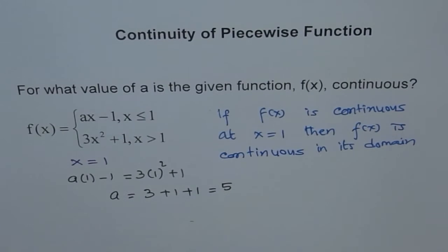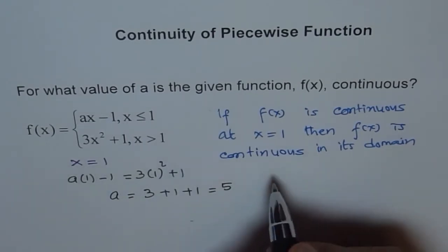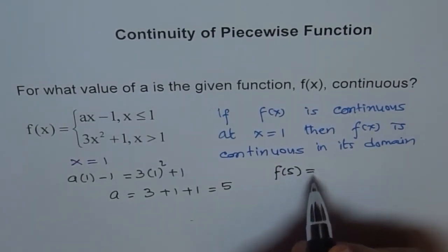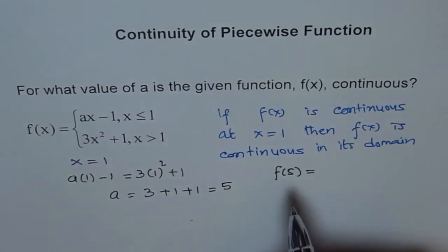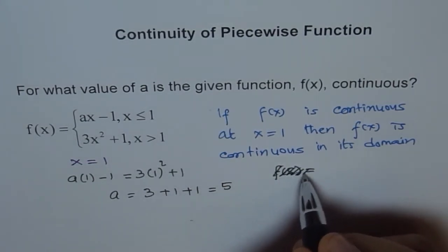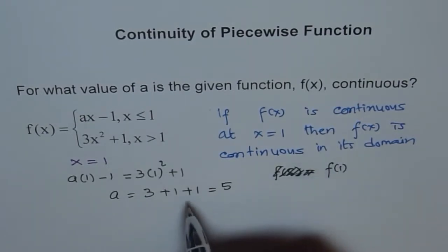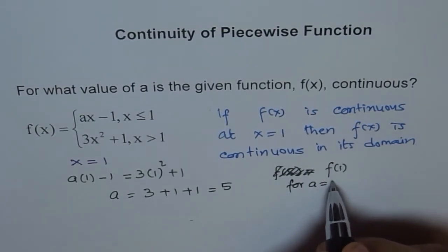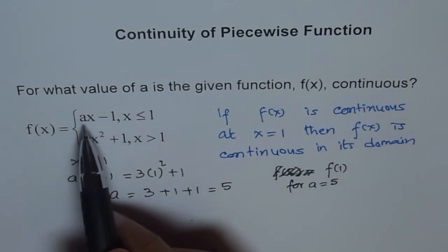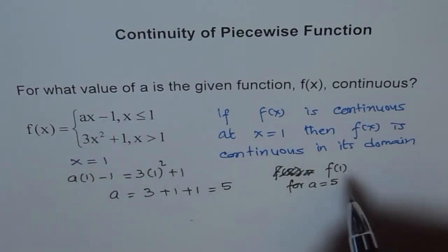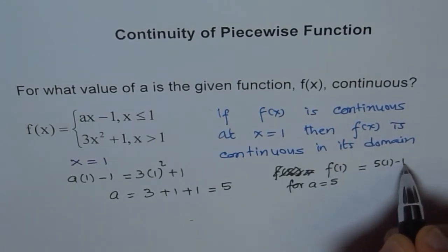So if a is five then the function should be continuous. Let us check the value of f of one. f of one when a equals five - if a is five then our function is five times one minus one, which is five minus one equals four. So f of one for a equals five is equal to four.